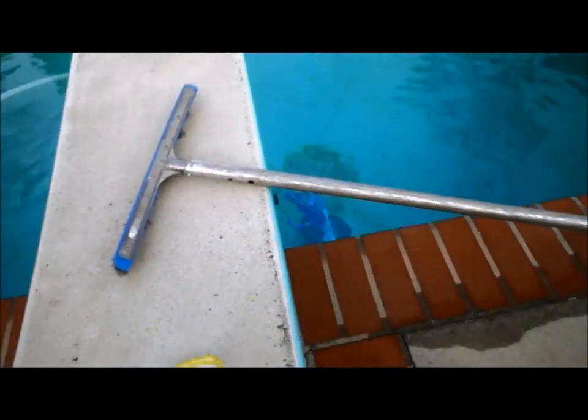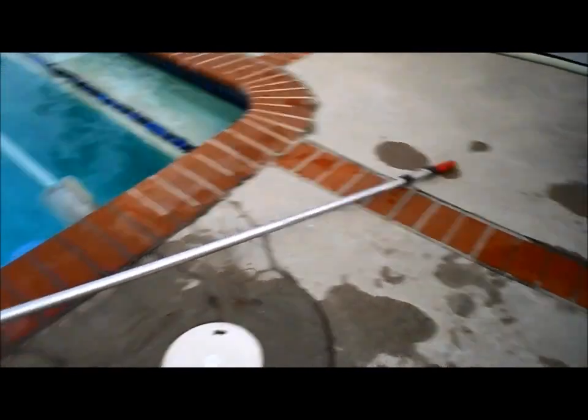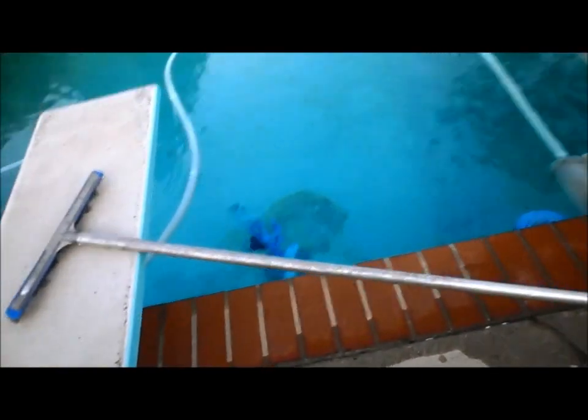Now I'm going to check the depth of the deep end by sticking my pole in and extending it out and then measuring how deep the pool is. Just make sure you don't fall into the pool while you're doing this. So it's right there in the deep end, and I'm going to go ahead and get a measurement now.